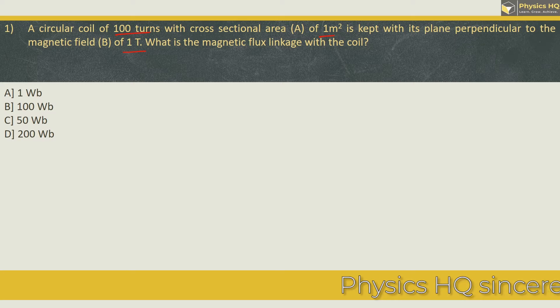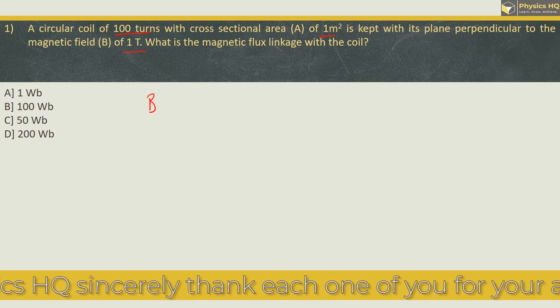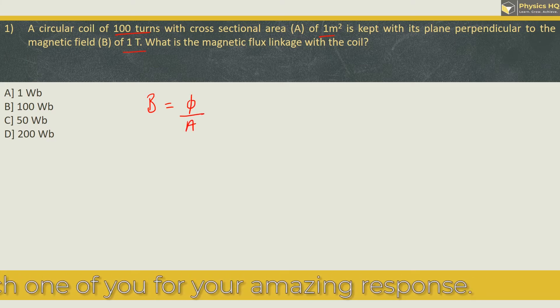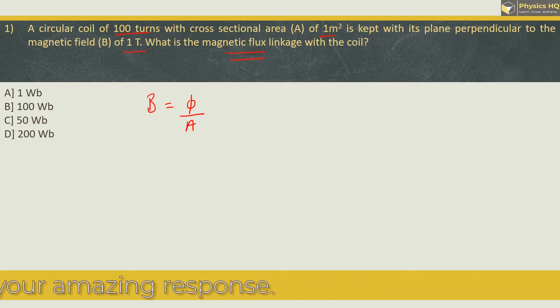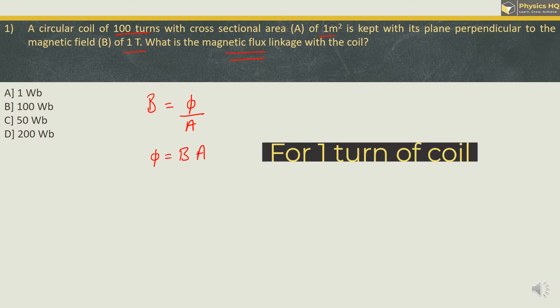So first of all we will write down the formula for magnetic field. Magnetic field B is given by flux per unit area. Now we are supposed to find magnetic flux over here. So flux can be written as B into A. Now we have over here 100 turns. So to find out the total flux linkage, we will be multiplying this by the number of turns. And now we will put up the values: N is 100, B is 1 tesla, area is also 1. So our option is 100 Weber. So the correct option is B.